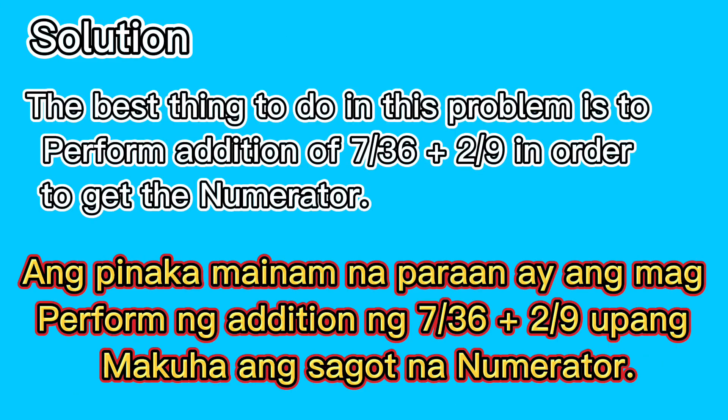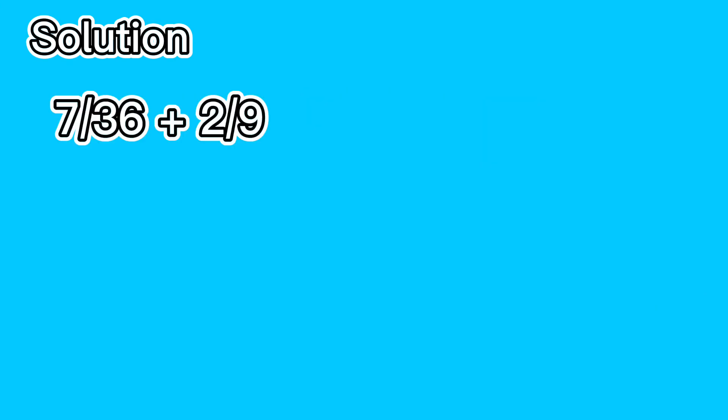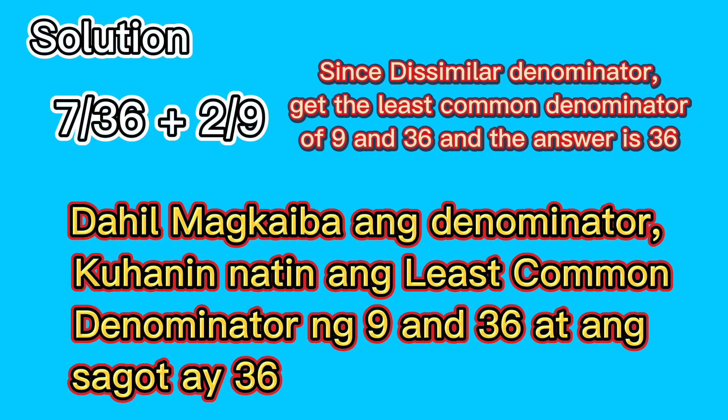Solution. The best thing to do in this problem is to perform addition of 7 over 36 plus 2 over 9 in order to get the numerator. 7 over 36 plus 2 over 9. Since they have dissimilar denominators, get the least common denominator of 9 and 36, and the answer is 36.